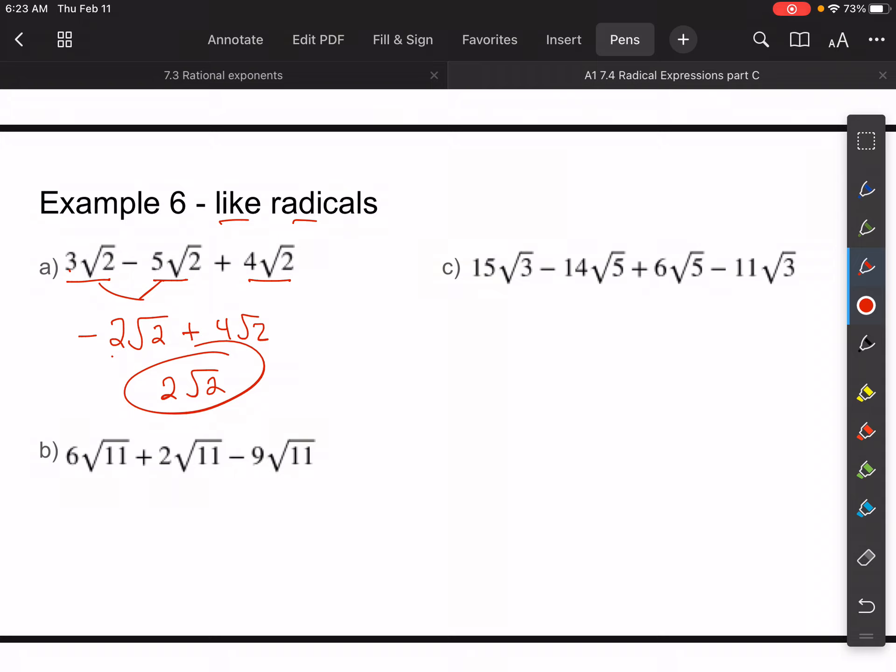The part B here, these are all 11s. So I can just add and subtract at will here. So 6 + 2 is 8. 8 - 9 is -1. So this is -√11. You can put the 1 there if you would like, but we would typically just leave it like this. So it's -1 times the root of 11.